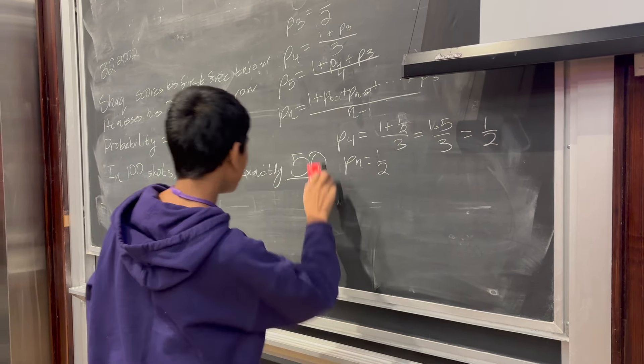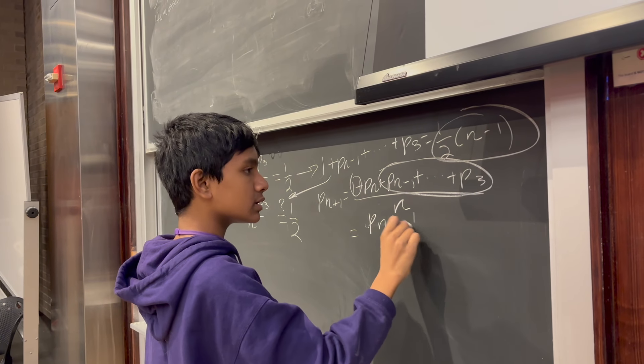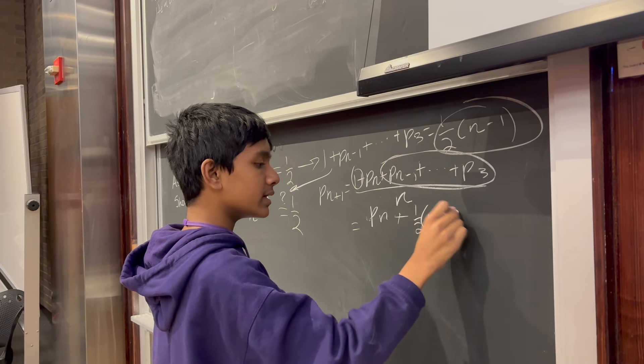Then we'd have to show Pn plus 1 is equal to, well, we already know this by definition. We have to show that this is equal to 1 half. So how do we do that? Well, we already know from our assumption that 1 plus Pn minus 1 plus all the way to P3 is equal to 1 half times n minus 1. So plugging that into here, we know that Pn plus 1 is equal to 1 plus Pn plus Pn minus 1 plus dot dot dot plus P3 divided by n. So that's equal to Pn plus, well, what's the rest of this? That's equal to that right there.